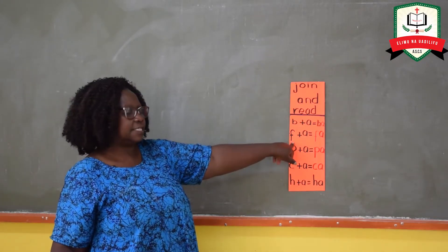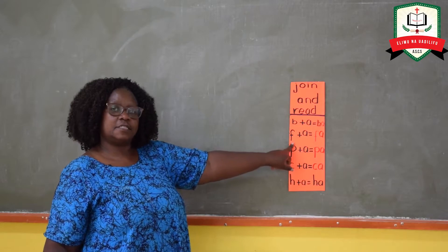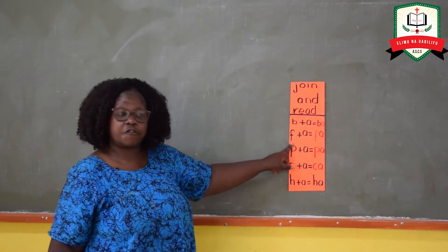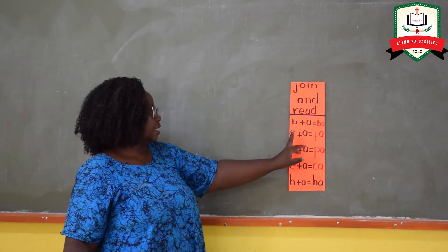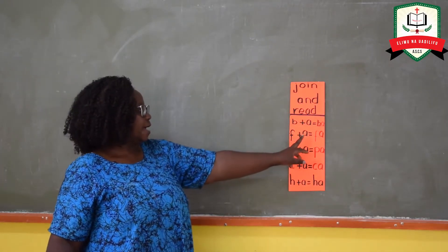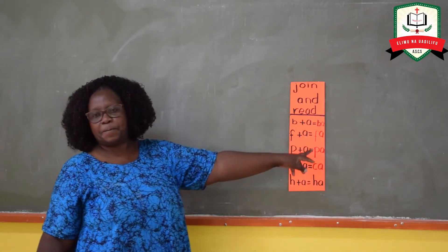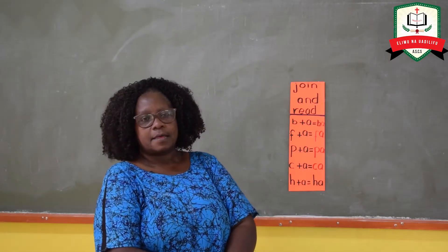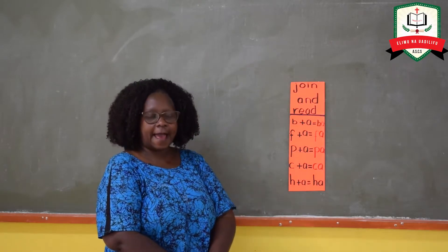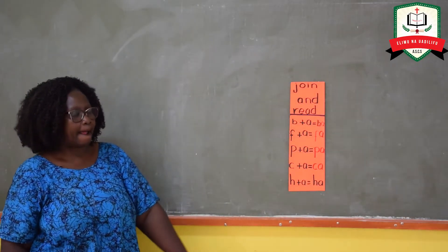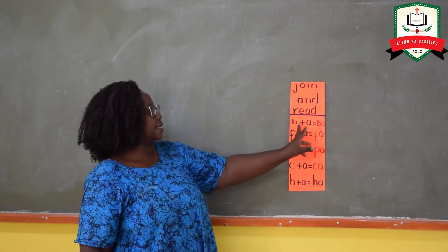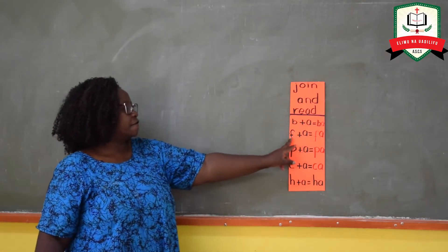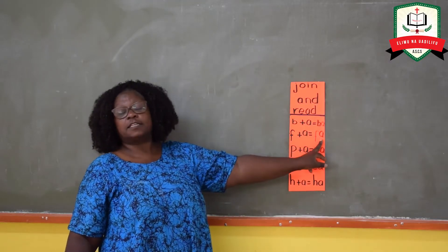Now let's look at the next sound. Who can tell me which sound is this? That is sound f. Everybody say f. Now when we take sound f and sound a, we put them together — who can read for me? It says fa. Everybody say fa. F and a, together we get fa.